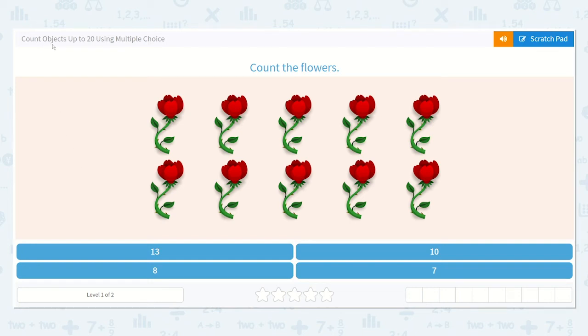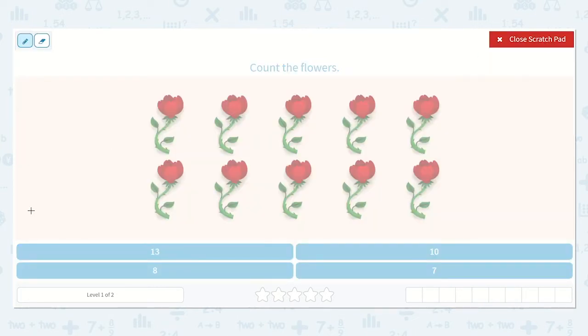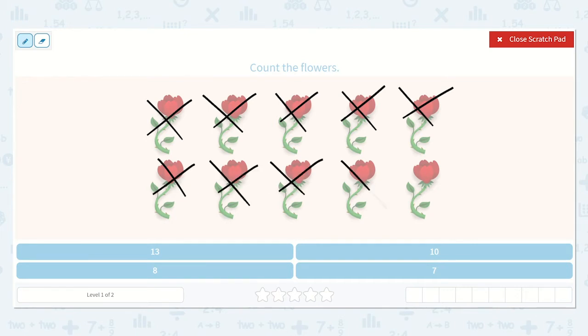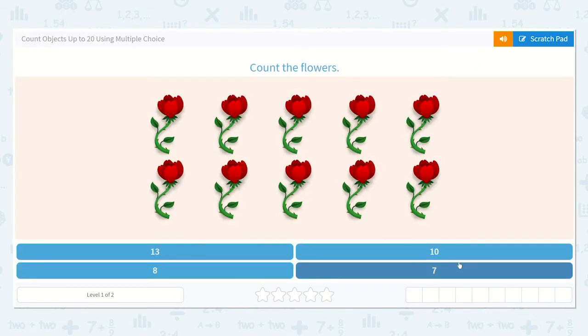Okay, are you ready to count objects up to 20 using multiple choice? Great! So let's use our scratch pad and we can make marks on the flowers as we count them. I'm going to cross off the flowers as I count them instead of drawing a line under them. One, two, three, four, five, six, seven, eight, nine, ten. So there are ten. I know ten is a one and a zero. Do you see that down below? Yes, right here. Alright, let's choose that one.